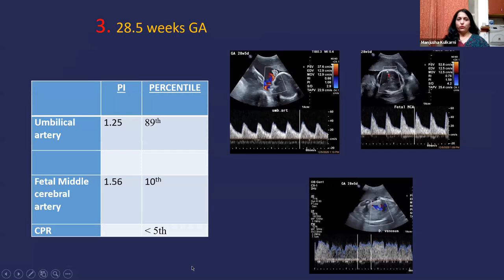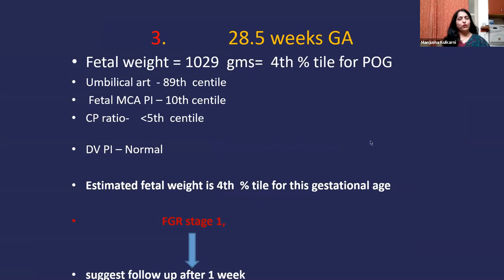On Doppler, the CPR had gone below the 5th centile. However, the ductus venosus flow pattern remained within normal limits subjectively and objectively. Since the ductus venosus PI was normal, even though the CP ratio was abnormal, she was again staged at fetal growth restriction Stage 1.